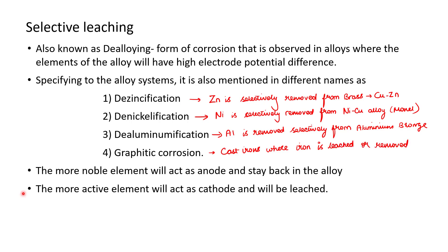When these alloys are exposed to a corrosive environment, depending on the electrochemical potential of the individual elements, the more noble element will act as an anode and stays back in the alloy. The more active element will act as a cathode and will be leached or removed.